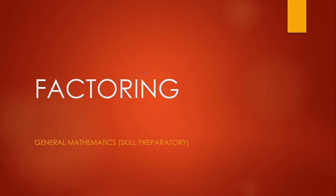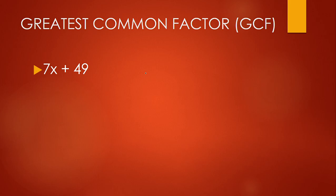Let's start with A. The first one is the greatest common factor. When we say greatest common factor, we are looking for a factor which is common among all the terms. When we say factor, those are the numbers that once we multiply them, that would result in that certain number.